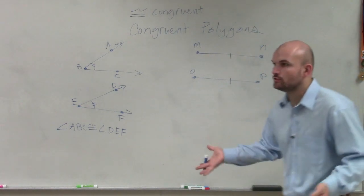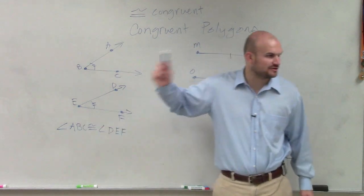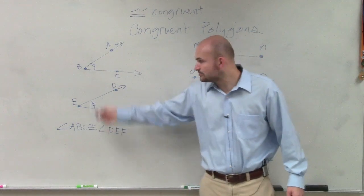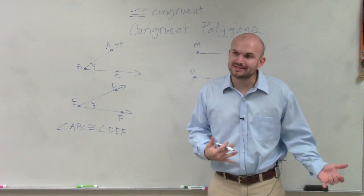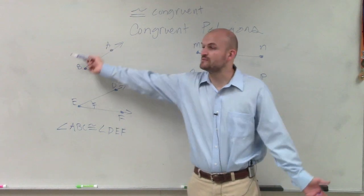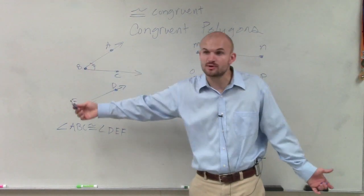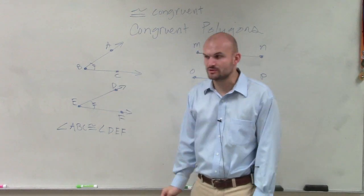Congruent means they're equal in measure. Whatever the measurement is of this, 30 degrees, 45 degrees, whatever, these two angles are equal to each other. And how do we represent they're equal? We represent they're equal by giving them tick marks. We can give them one tick mark, two tick marks, three tick marks, four tick marks. But we say they're equal by giving them those tick marks.